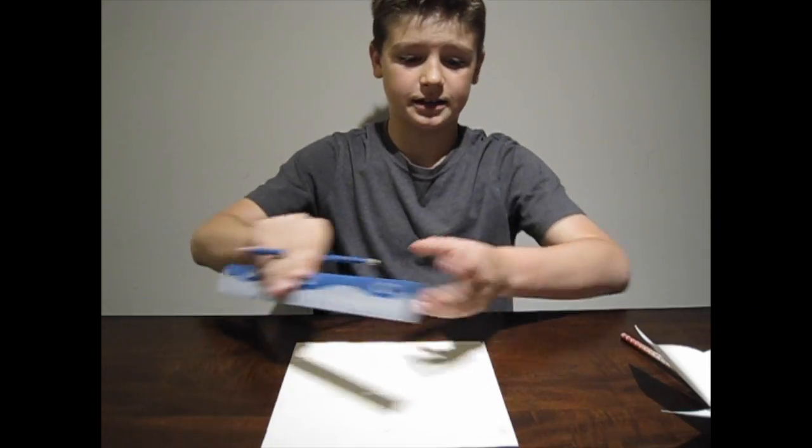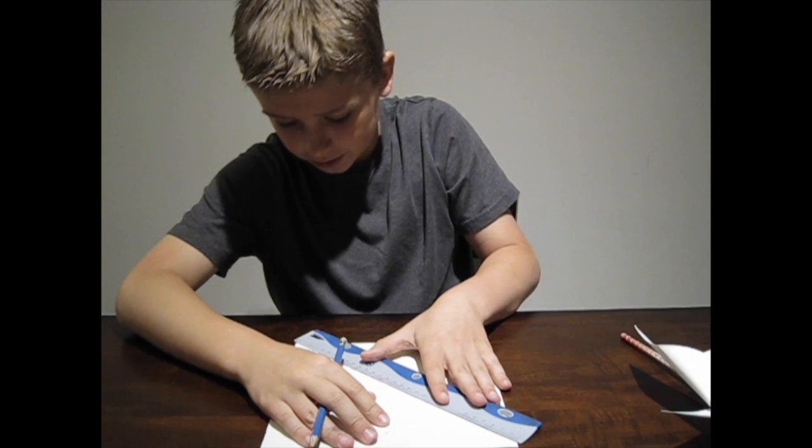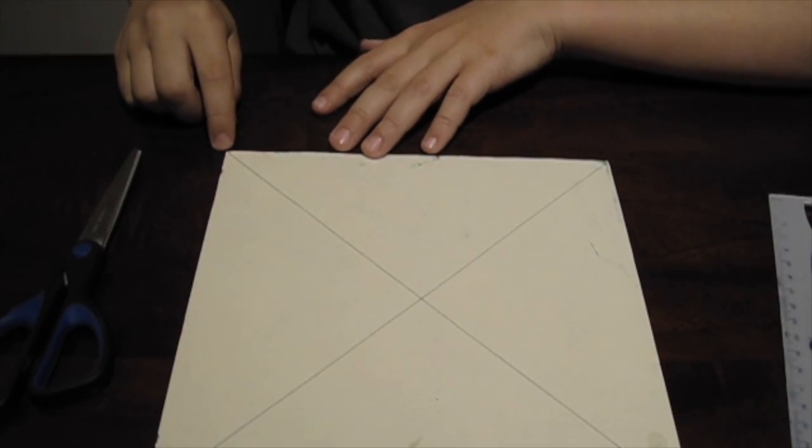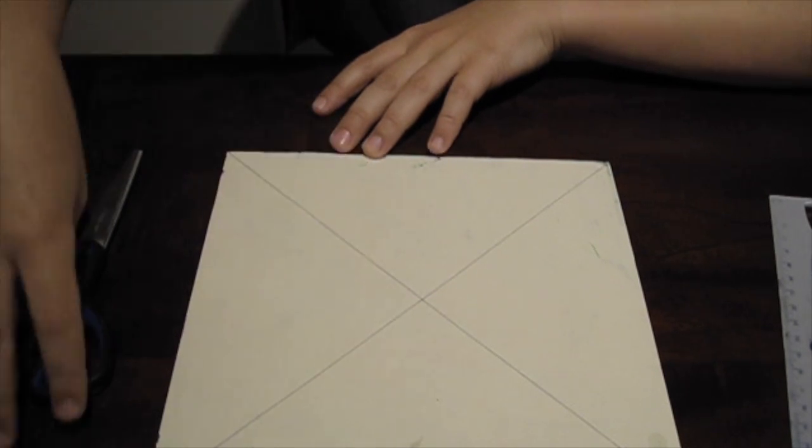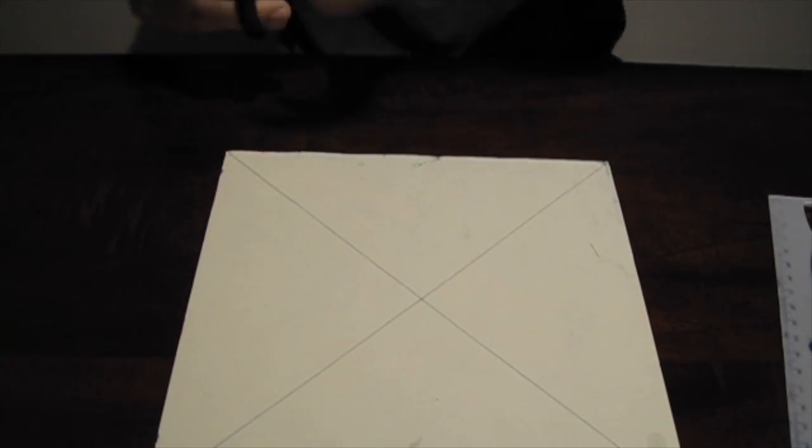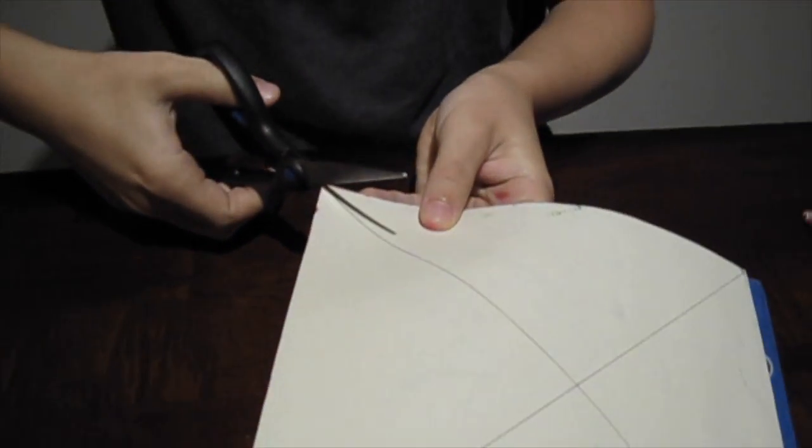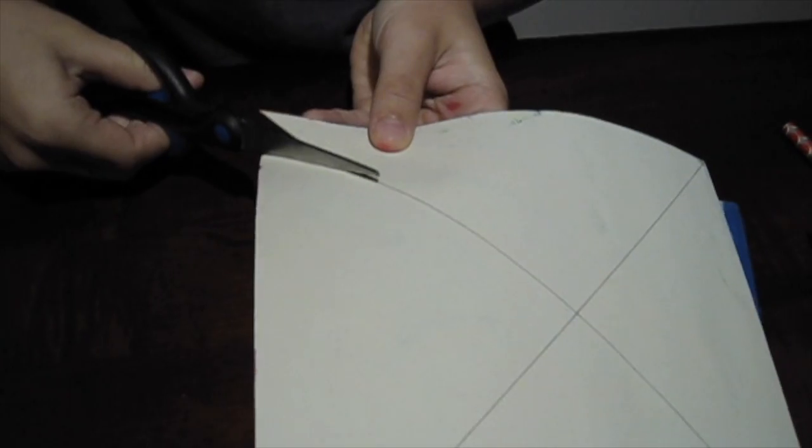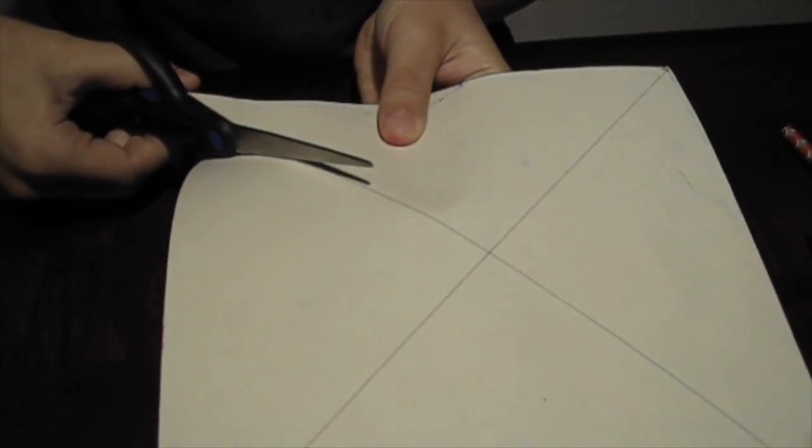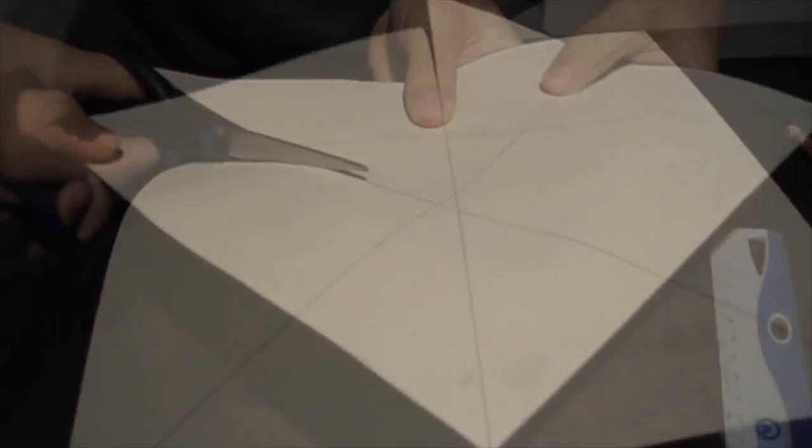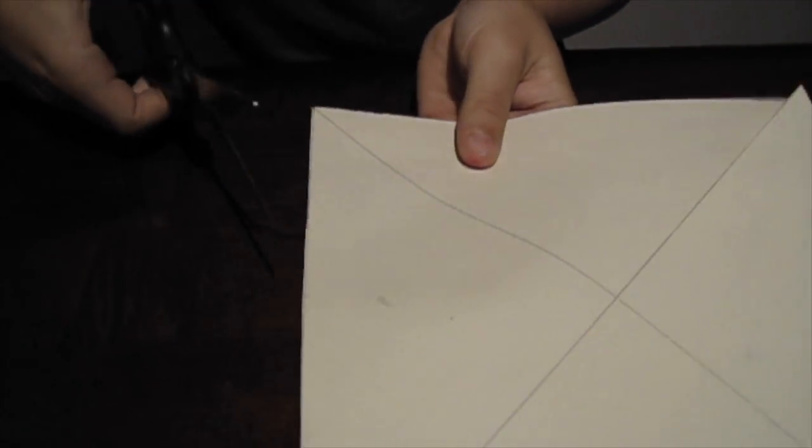Next, draw a line diagonally from corner to corner. Then you're going to want to cut a line from the corner to about three quarters from the center. Then do that on all four sides.